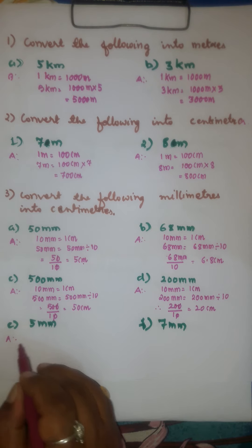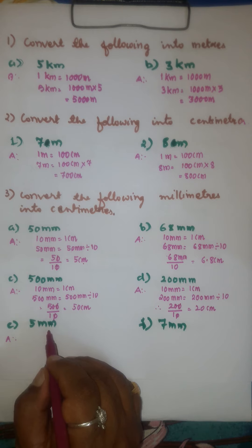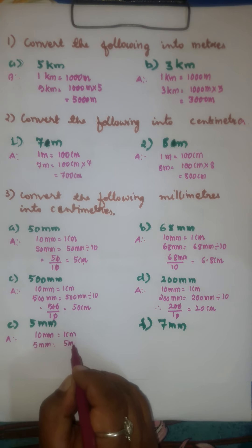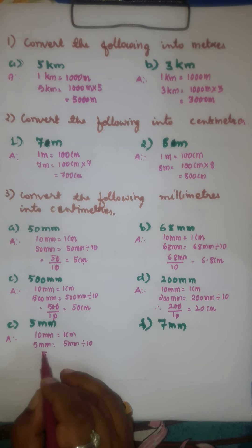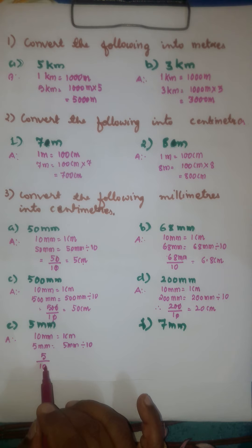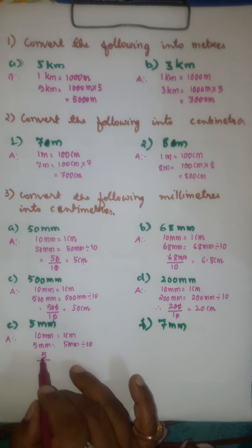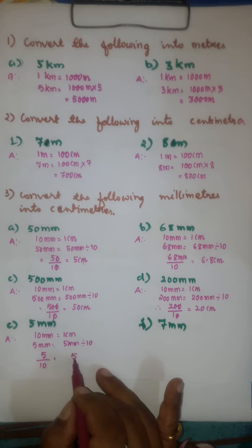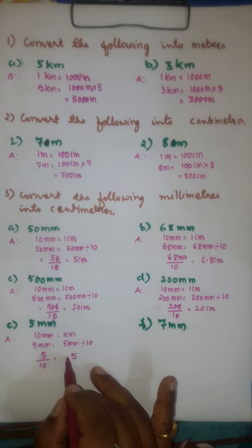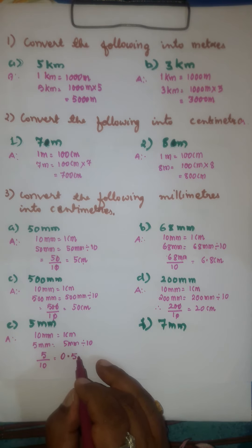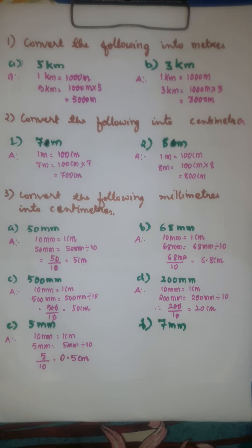Fifth problem: we have to convert 5 millimeters into centimeters. We know that 10 millimeters is equal to 1 centimeter. So 5 millimeters divided by 10 — in the numerator write 5; in the denominator after 1 there is only one 0, so shift 1 place from right to left and put the decimal point. Therefore, 0.5 centimeters is the answer.